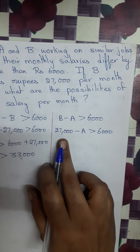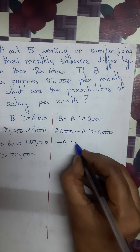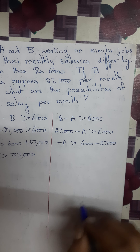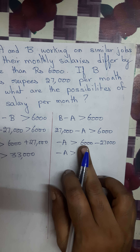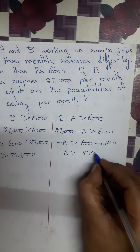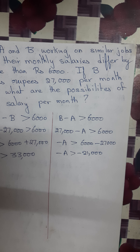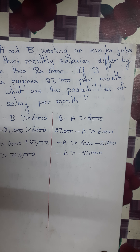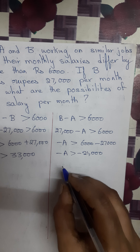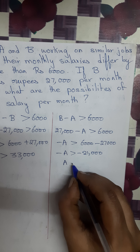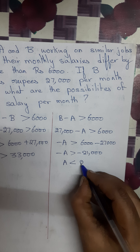Let me take Rs. 27,000 to the other side. So I will have: minus A is greater than Rs. 6,000 minus Rs. 27,000, which equals minus Rs. 21,000. I want to remove this minus sign, so I have to multiply the inequality by minus sign. When I multiply the inequality by minus sign, the direction of the inequality changes — this greater than will become less than. So A is less than Rs. 21,000.